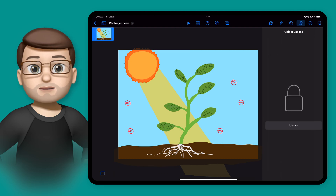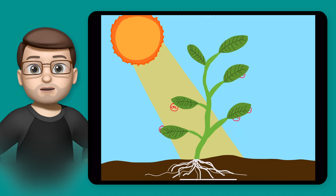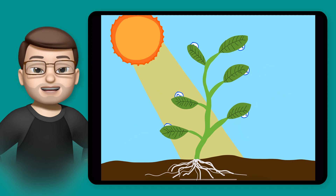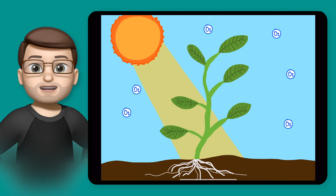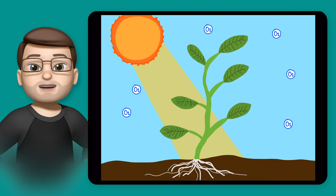That means when I press Play in Keynote, you can see the carbon dioxide being absorbed into the leaves and the plant releasing oxygen back into the atmosphere, and all of those molecules disappear into the plant. Perfect.